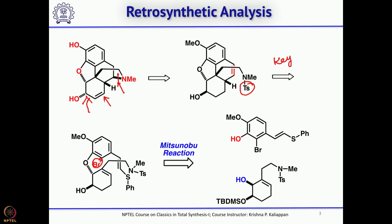You have a bromine, so it can generate a radical here. That radical can add first in a 5-exo fashion, then this can add in 6-endo fashion to form this radical. When that radical comes back, the thiophenyl group will go out. That is how the tetracyclic core structure of morphine was planned.